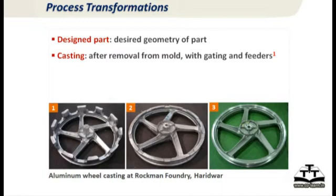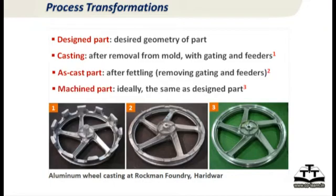To avoid confusion, we will say 'designed part' for what the OEM wants. We will say 'casting' to refer to the entire thing, including gates, runners, and risers — what is removed from the mold cavity. We will say 'as-cast part' after the runners and gating are removed. And finally 'machined part,' which ideally should be the same as your original designed part. These are the four terms and four steps in the casting process.